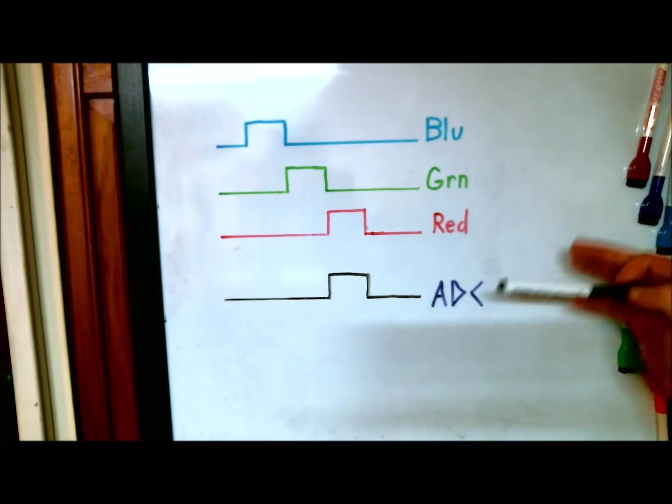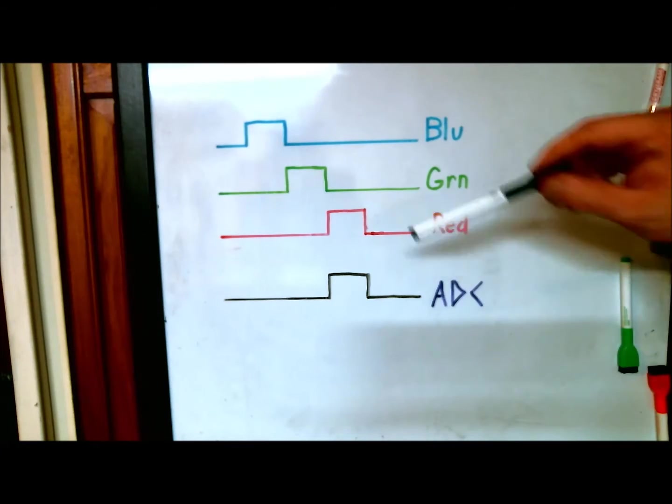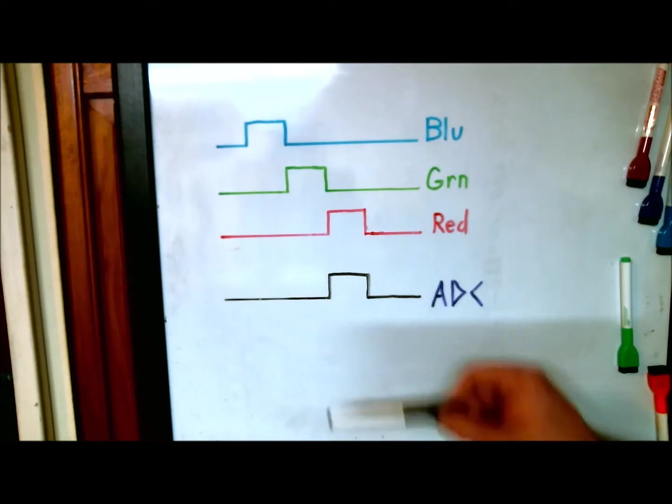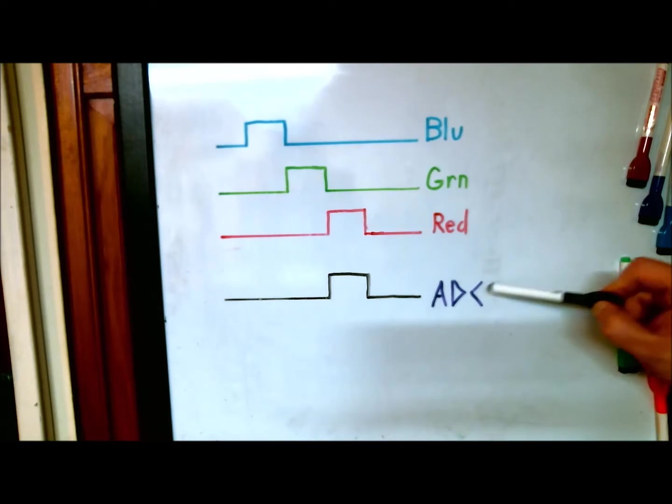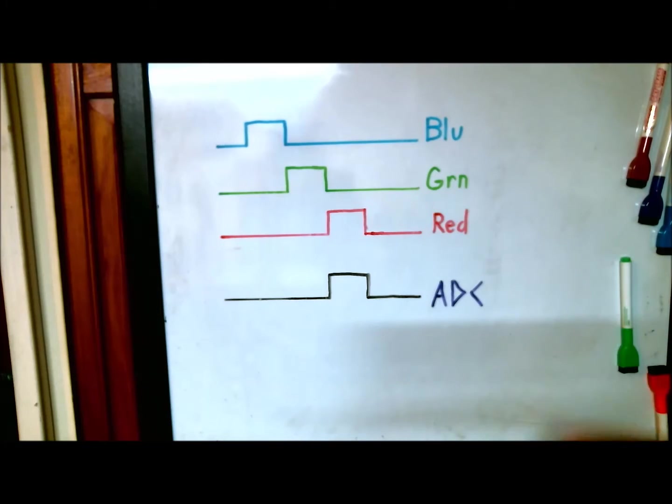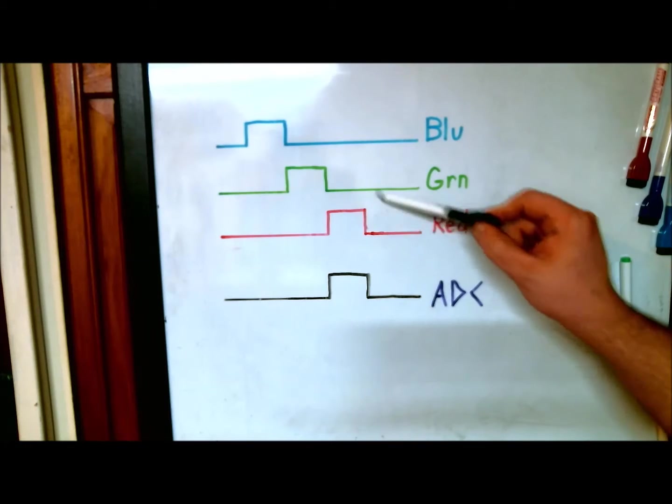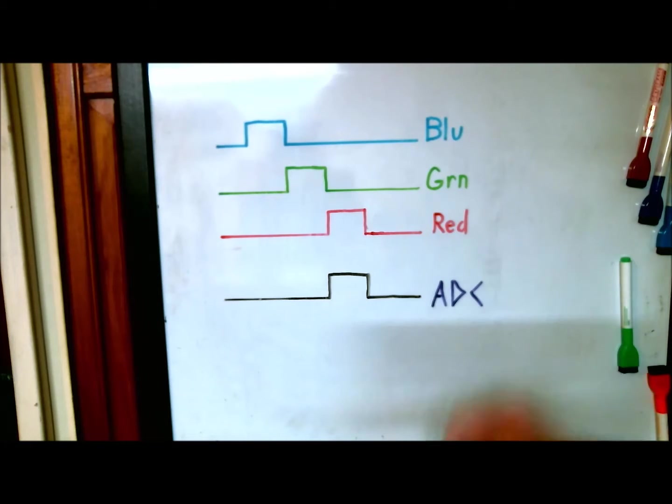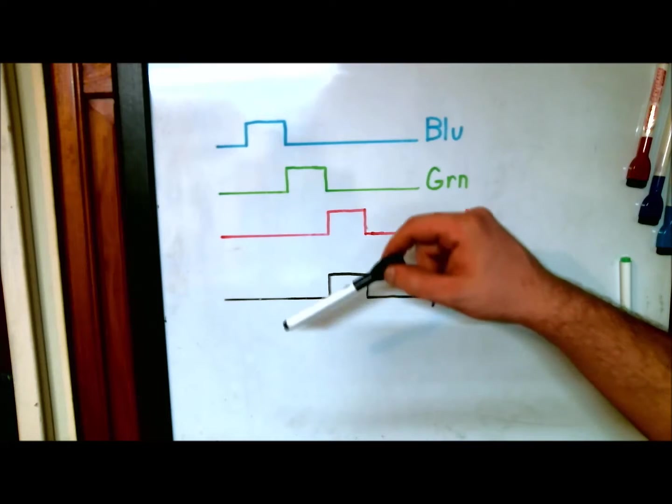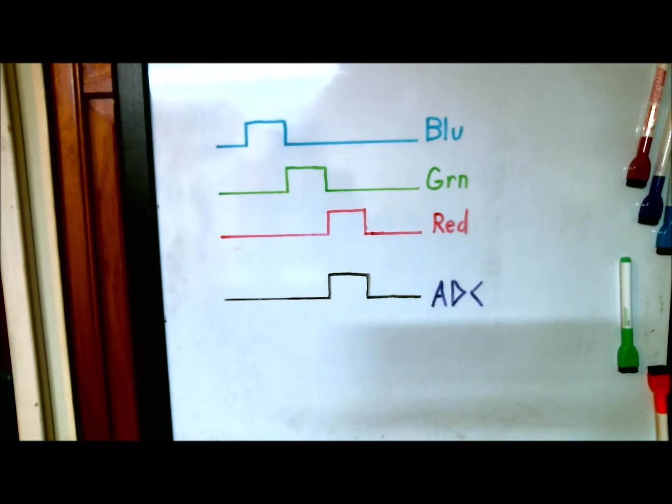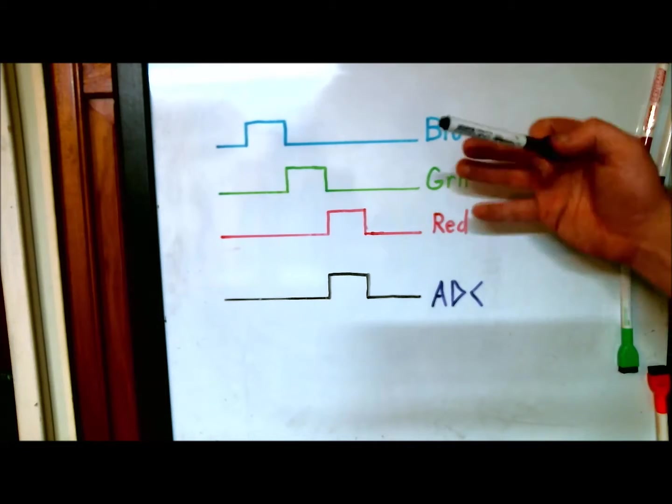So this is how I set up my color detector. First, I turn on a blue LED and I measure the resistance of the photoresistor by way of the ADC. And then I turn on the green, do the same measurement. And then I turn on the red, and I do the same measurement. So whichever one has the highest voltage, aka lowest resistance, would be the one that is reflecting the most amount of light.